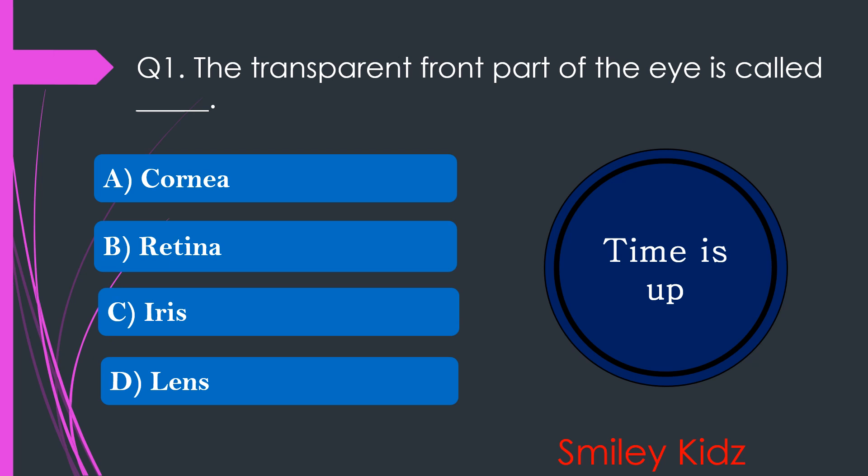Your time is up and the right answer is option A. Cornea. The transparent front part of the eye is called cornea.